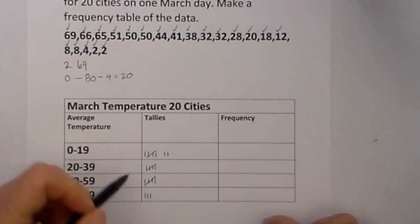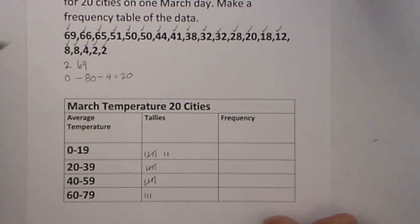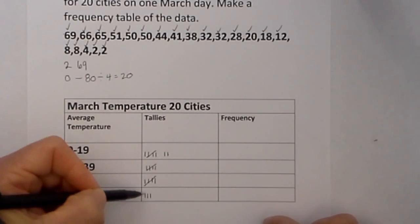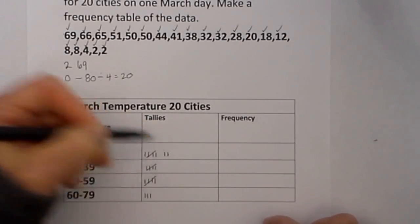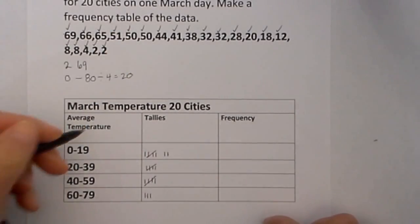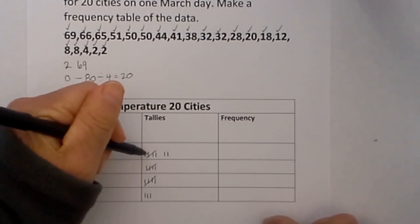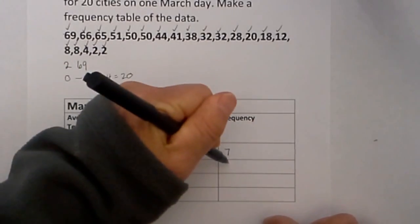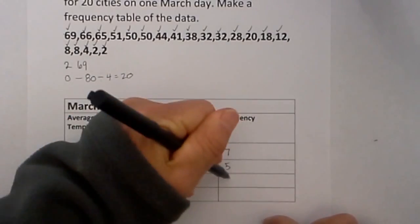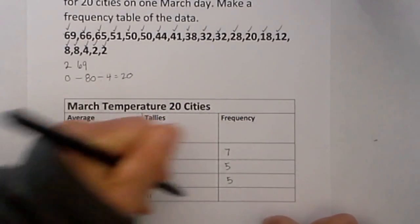Then if you really want to be careful you can total up. We know that we have 20 numbers here and I have 5, 10, 15, 18, 20 so I know I have done all my numbers. Then I total my frequency, 5 plus 2 is 7 and this is 5, this is 5, and then this is 3.